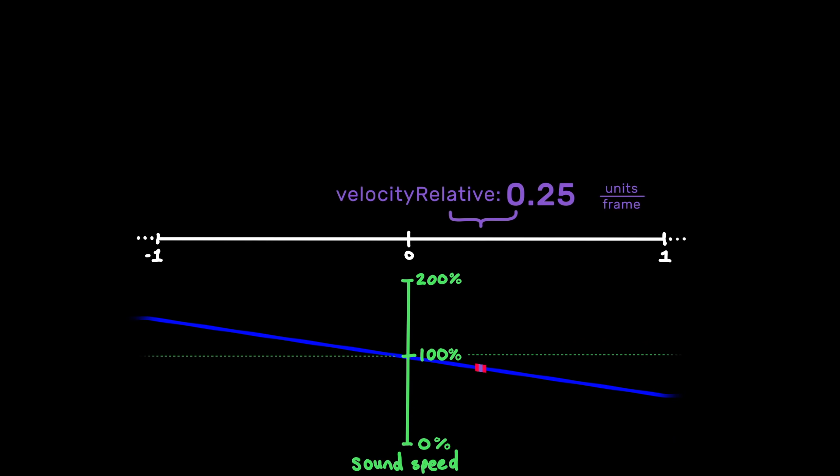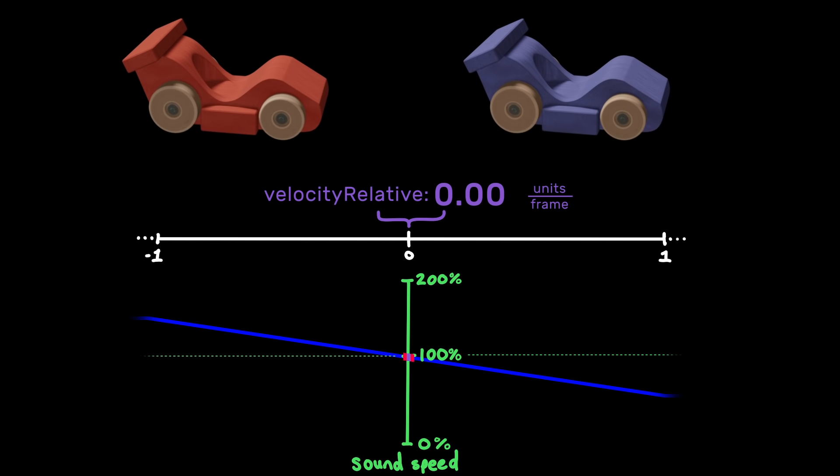We'll map out a range of values, positive and negative, that velocity relative can be. And that will correspond to the speed at which our sound will play. If velocity relative equals zero, that means the carts are not getting any closer or farther from each other. So that would mean the sound plays at a regular speed, 100% speed. And notice, that doesn't factor in how fast the carts are actually going.